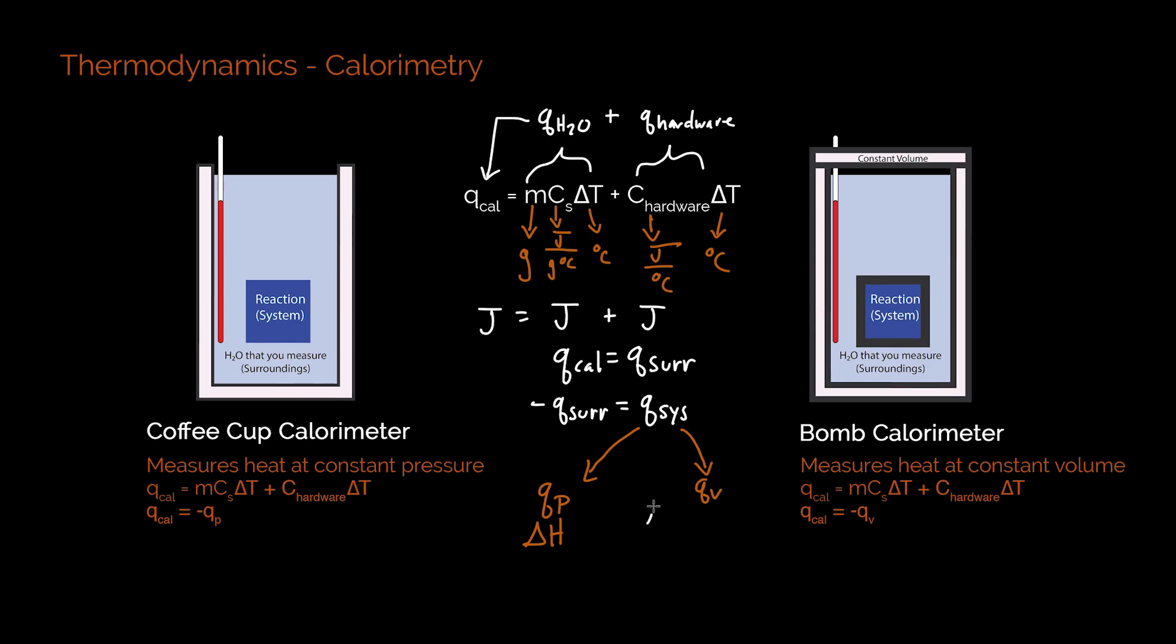So if we have delta u is equal to q plus w, but in chemistry, we are usually doing expansion work. So we can rewrite that w term as negative p delta v. So if we're at constant volume, our work value has to be equal to zero, because we're not having any expansion or compression. And therefore, this qv value gives us directly delta u.